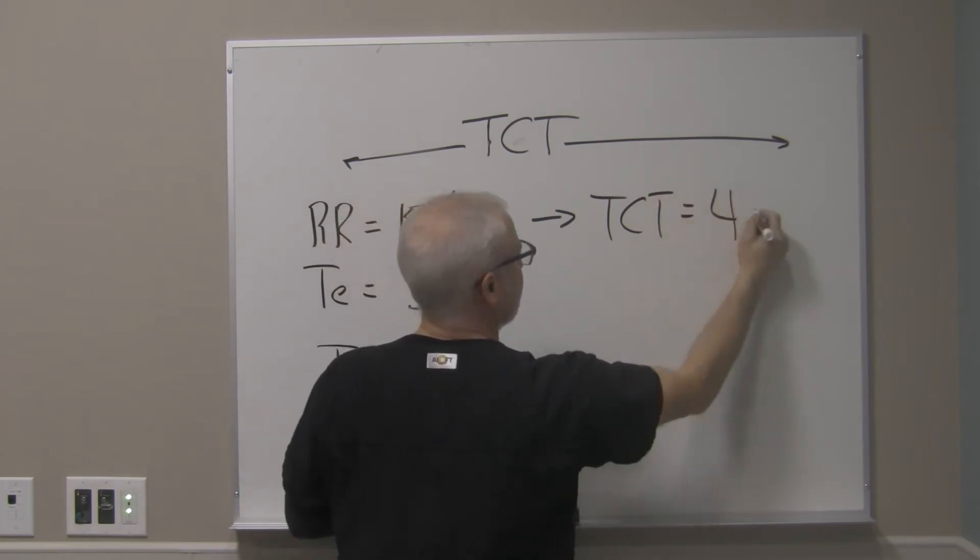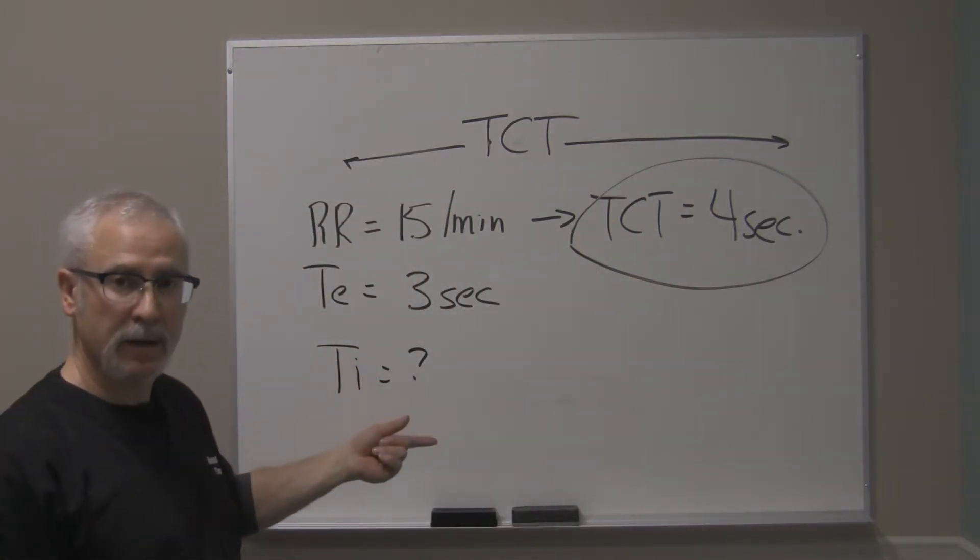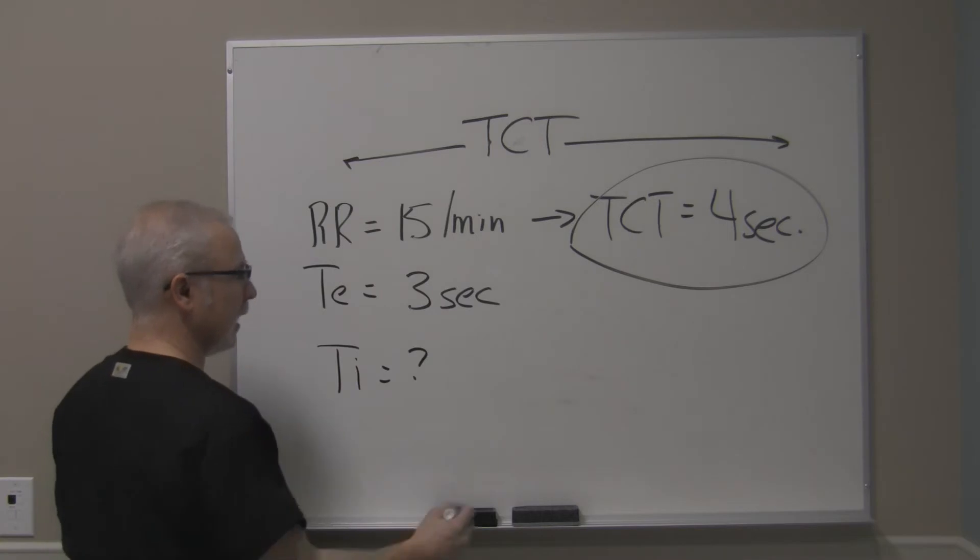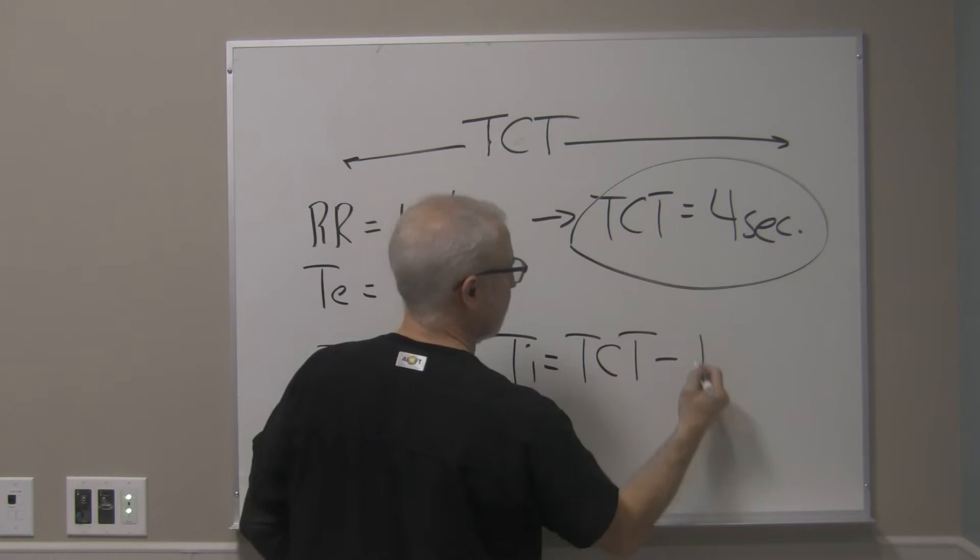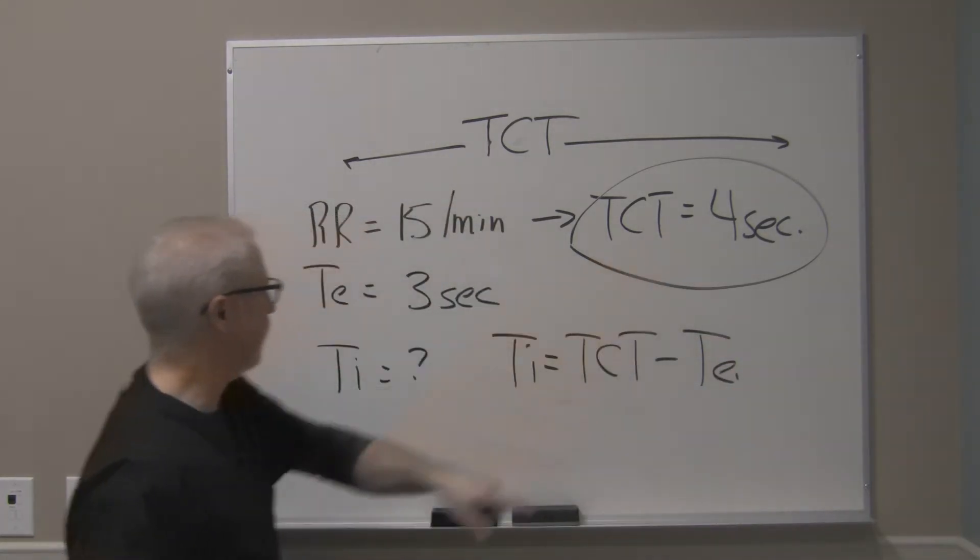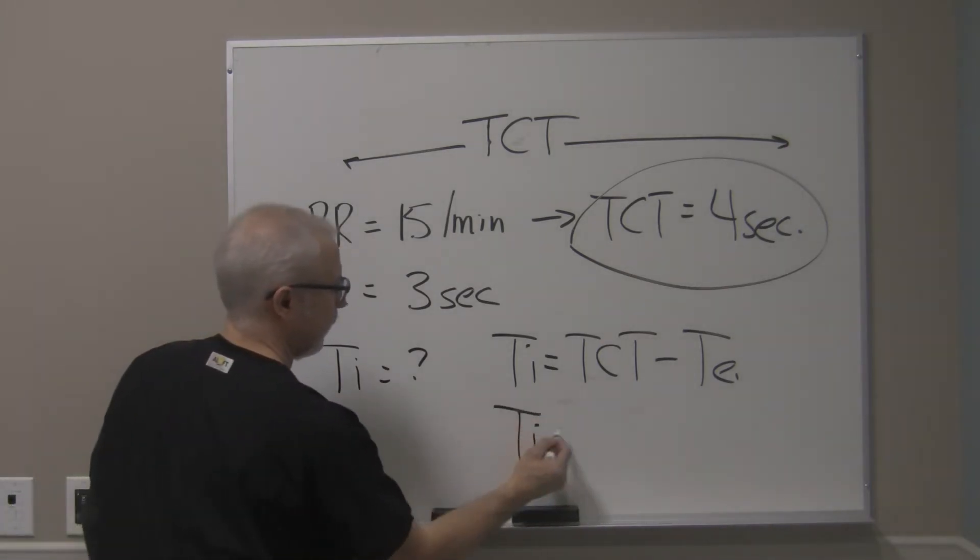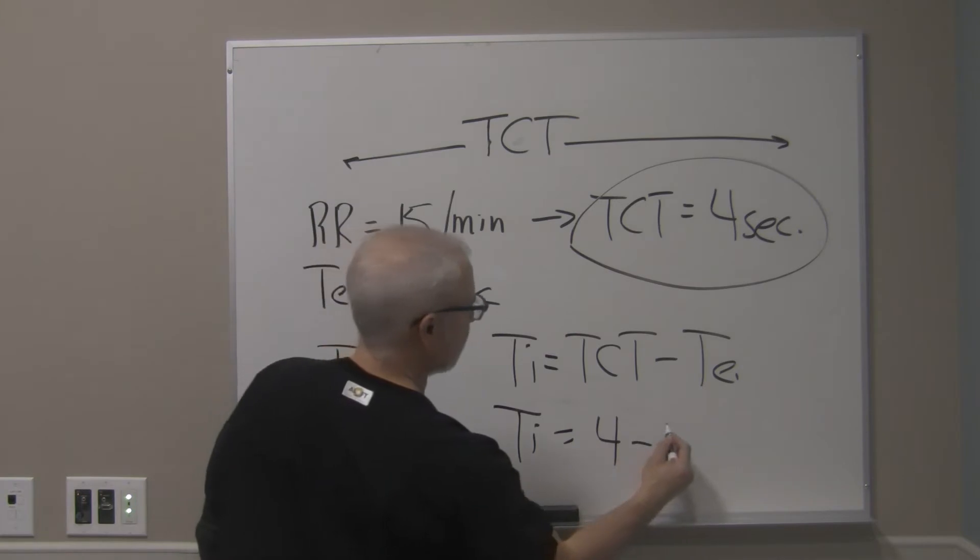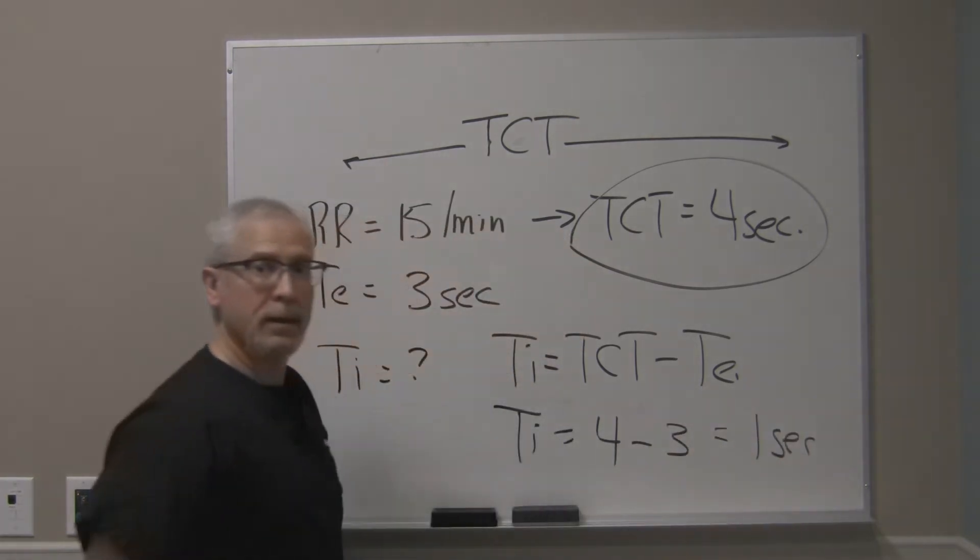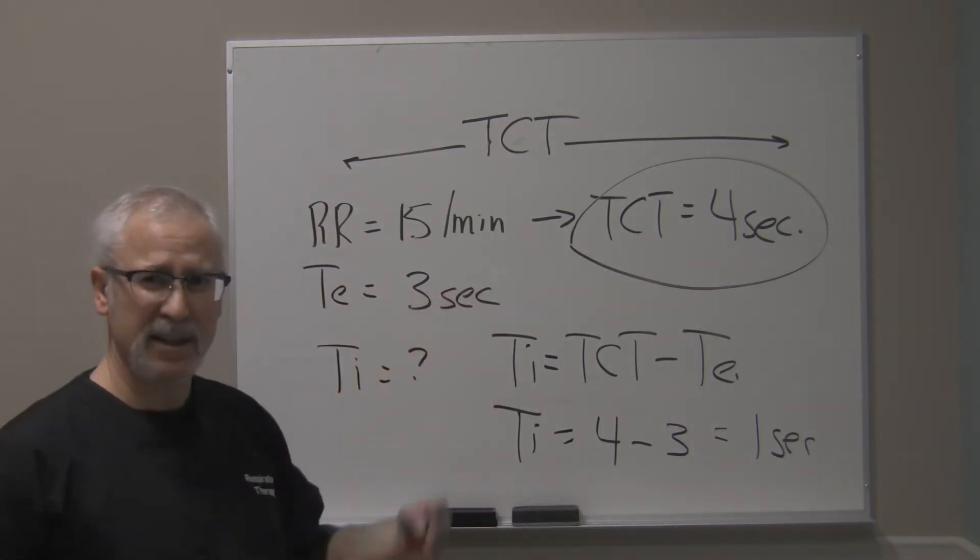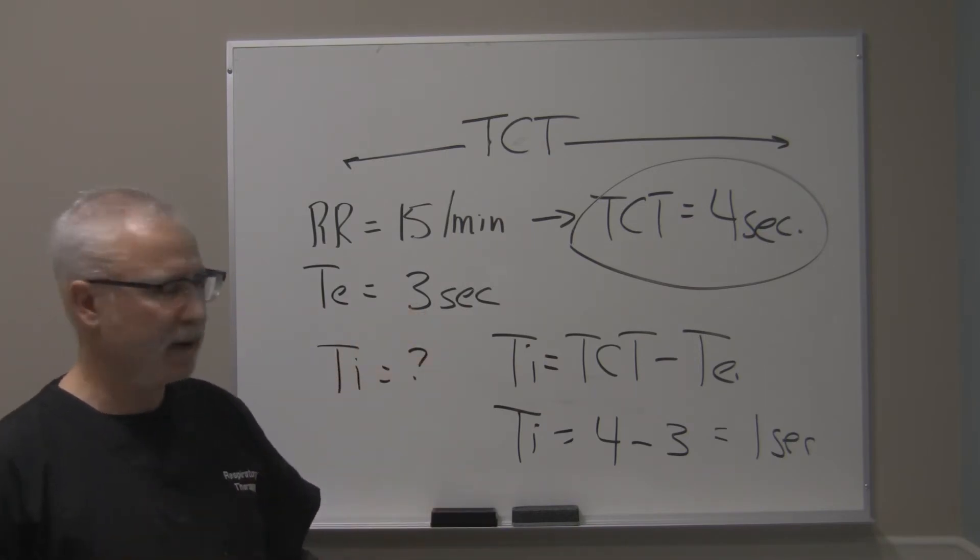we know with the respiratory rate of 15 per minute, that the total cycle time is going to be equal to 4 seconds. Once you have the total cycle time of 4 seconds, you can now use that in your calculation to figure out what the TI is. And we know TI is equal to TCT minus TE. We've got our total cycle time, we've got our expiratory time. We can now figure out I time. So TI is equal to 4 minus 3. So the TI then is equal to 1 second in length. And that's how you do that calculation. It's fairly simple. But in some cases, if you're dealing with decimal points, you might have to use a calculator.